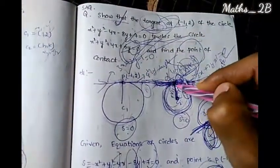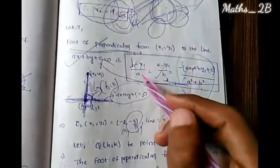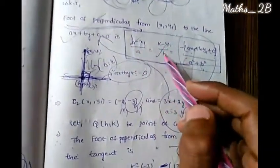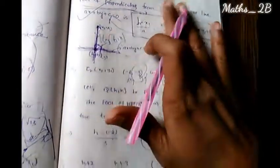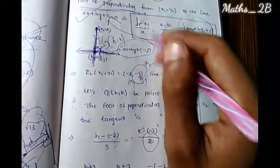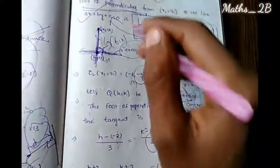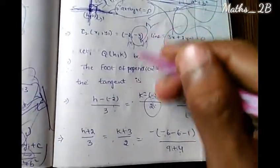To find the point of contact, we use the formula h minus x1 over a, then y1 over b, minus(ax1 plus b) divided by a squared plus b squared. The second circle's center and the tangent give us the point of contact between the two circles.